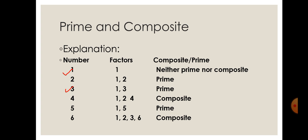The next number is three. Once again, three is divisible by only two numbers: one and itself, three. So three is a prime number.